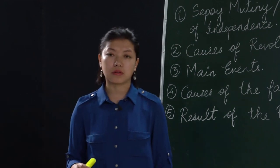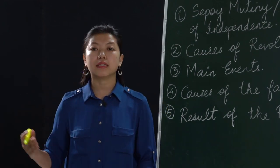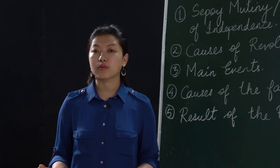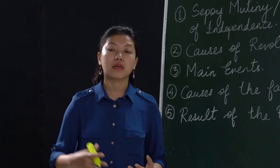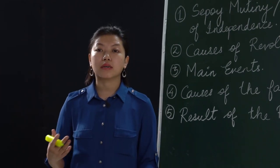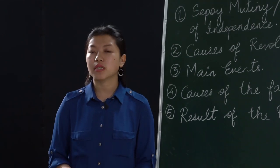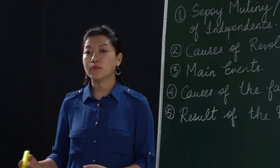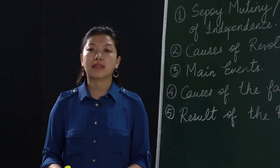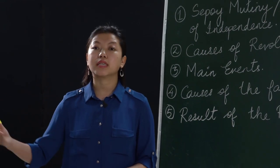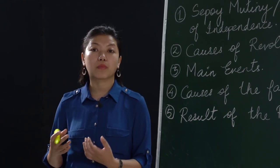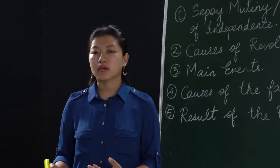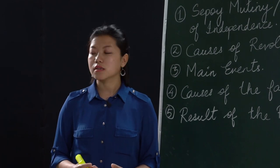Another reason was the lack of resources and communication. The British had proper communication — they had telegrams and could use the seas to get military goods from England. For the Indians, there was no communication at all. Whatever was happening in one state, other states had no idea. It was very difficult to pass information, and that was also one of the reasons the revolt failed so badly.